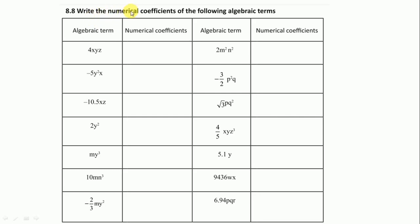Next, write the numerical coefficient of the following algebraic terms. We have to write numeric coefficient, which means we write just the number, whatever number is attached with the variable. Here is 4, -5, -10.5, 2. Here a number is not there, so we write 1. Then 10, -2/3.